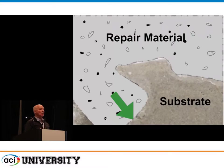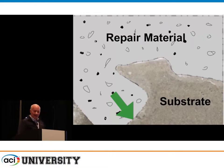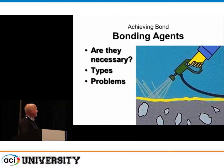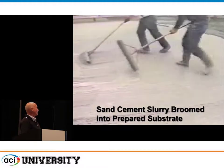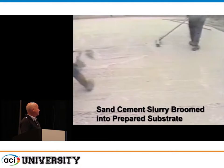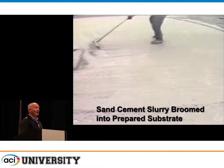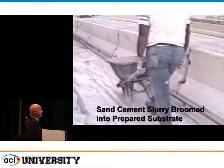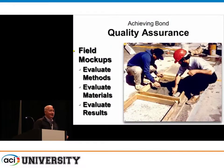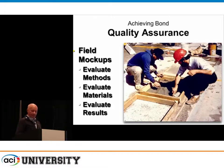Are bonding agents necessary? There's a sand-cement slurry being brushed right before an overlay — a lot of water there. Bonding agents have caused more failures because something goes wrong with the bonding agent. My recommendation is to do a little mock-up — try it without a bonding agent. Murphy's Law: it's simpler. You can try with and without bonding agents and see the pull-off test results. How do you do a pull-off test? You core down through the repair into the substrate, maybe three-quarters to an inch. You glue an aluminum or steel dolly on top with fast-setting epoxy, then apply an axial tension load with a measuring device.